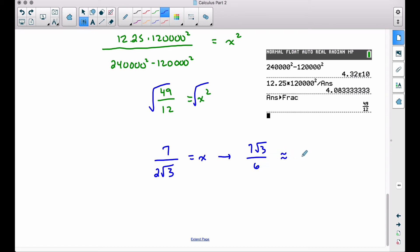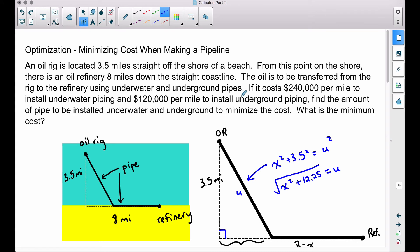And that ends up being somewhere right around 2.02 miles. Now let's be careful here because I'm going to leave my answer in this radical form because we have to answer a couple of questions. Those questions are find the amount of pipe to be installed underwater and underground to minimize the cost, and then we want to find the minimum cost. Recall, the length of our underground pipe is x squared plus 12.25, but we want to take the square root of all that to find the underwater piping.